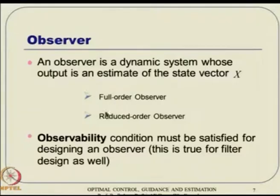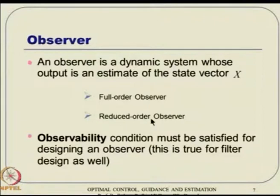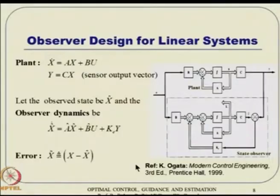There are ideas of full order observer and reduced order observer. A full order observer finds out the entire state all the time. The reduced order observer recognizes that some output vectors are actually the state information directly and do not contain noise, so we do not estimate those — we just take them. Whatever we do not know, we try to estimate. Also remember, the observability condition must be satisfied for designing an observer — no matter what you do, observability has to be there.